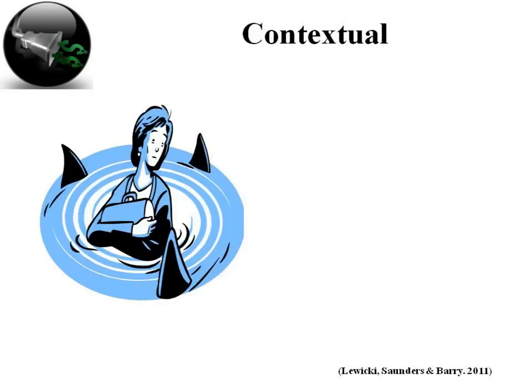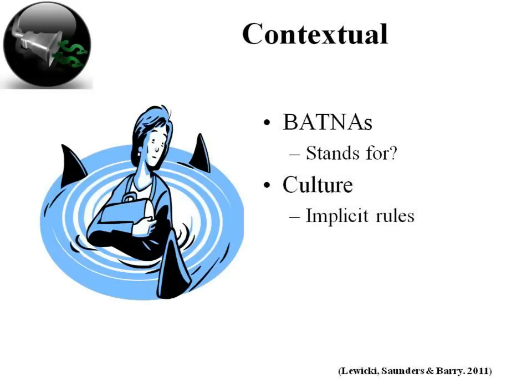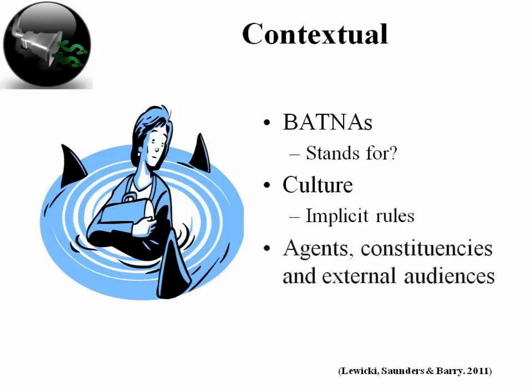On a contextual basis, power is based in the context, situation, or environment in which negotiations take place. BATNA — best alternative to a negotiated agreement — is an alternative deal that a negotiator might pursue if he or she does not come to agreement with the current other party. Culture is involved and often contains implicit rules about the use of power within organizations, and it's not the same in every organization. There are also agents, constituencies, and external audiences involved — all these parties can become actively involved in pressuring others.